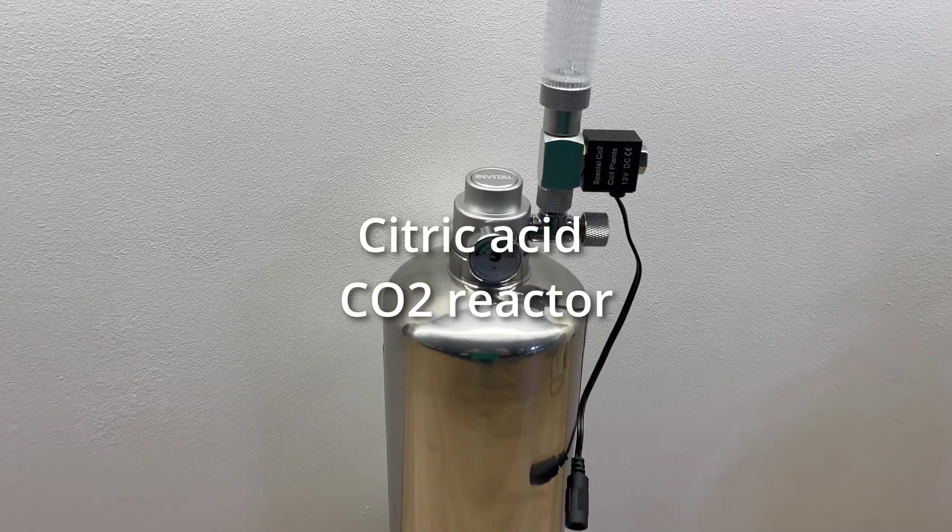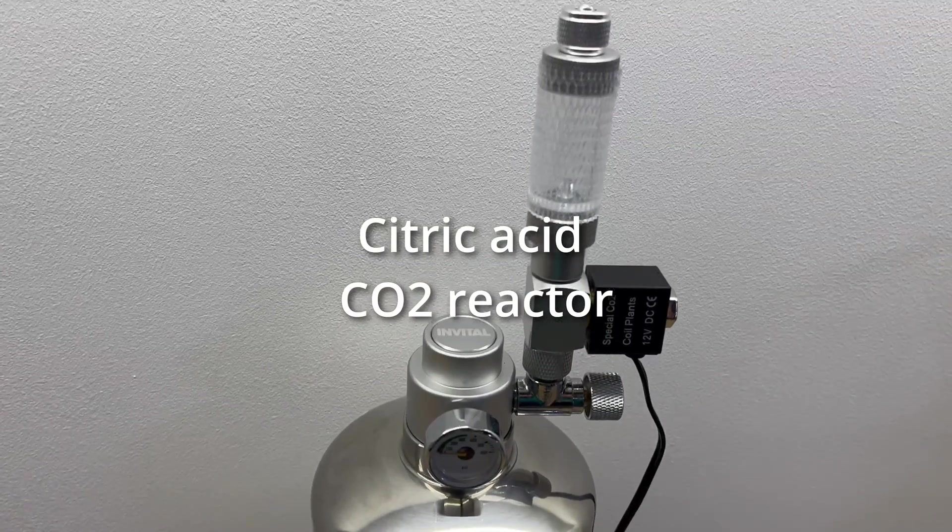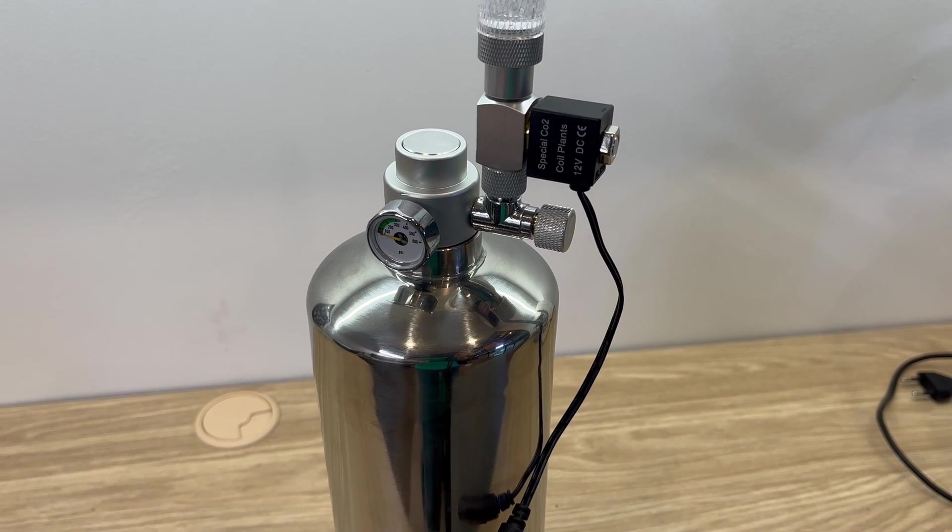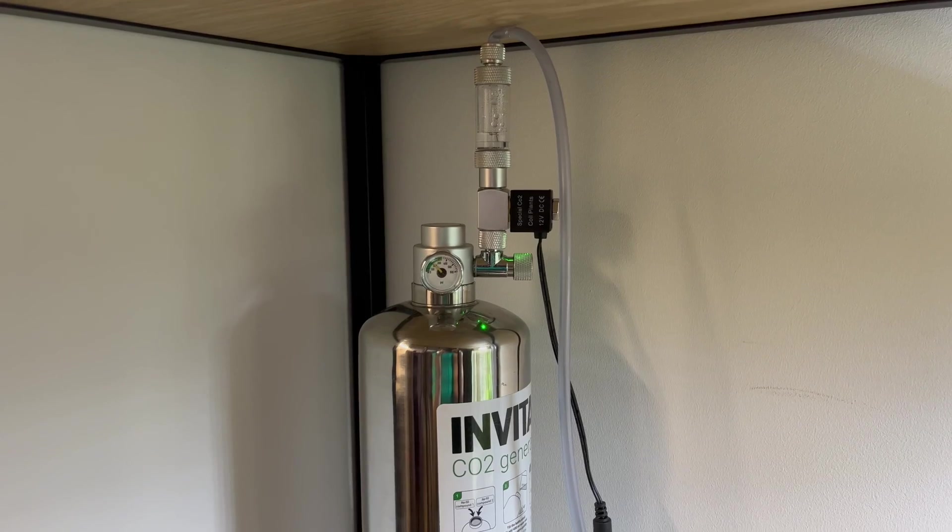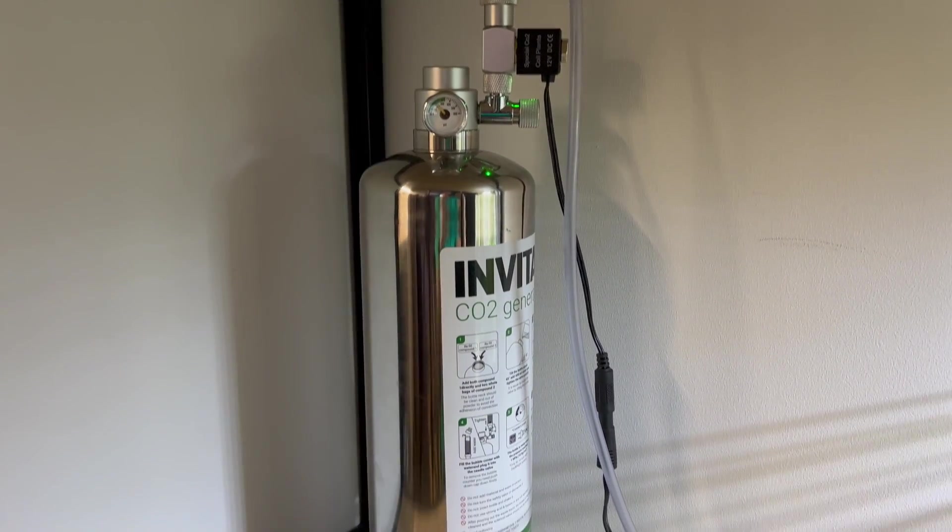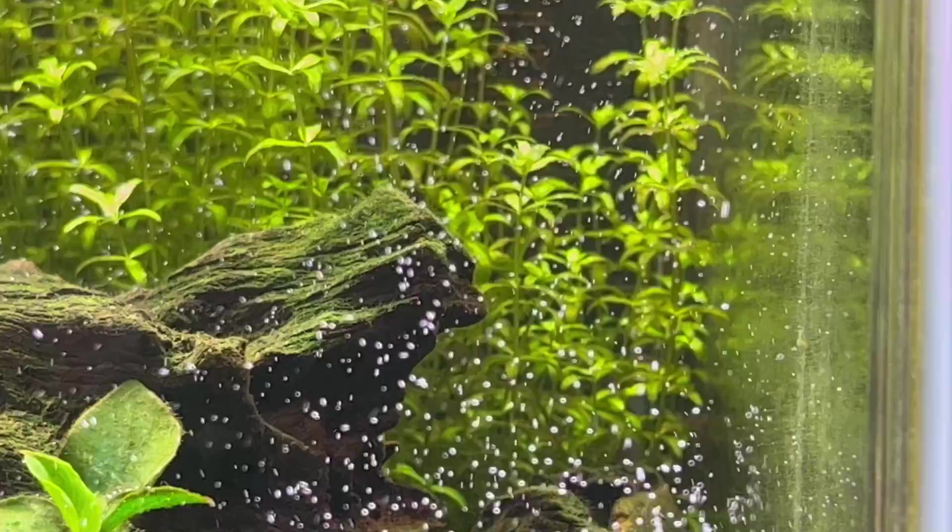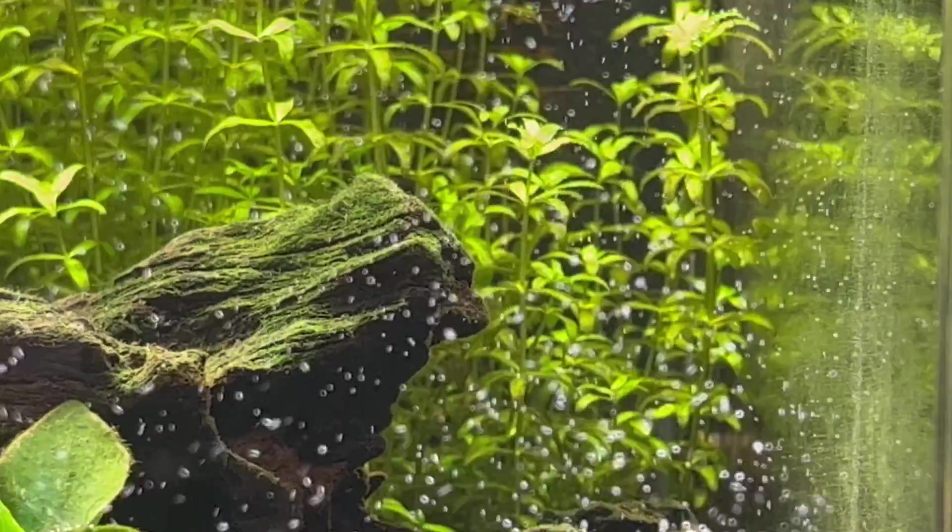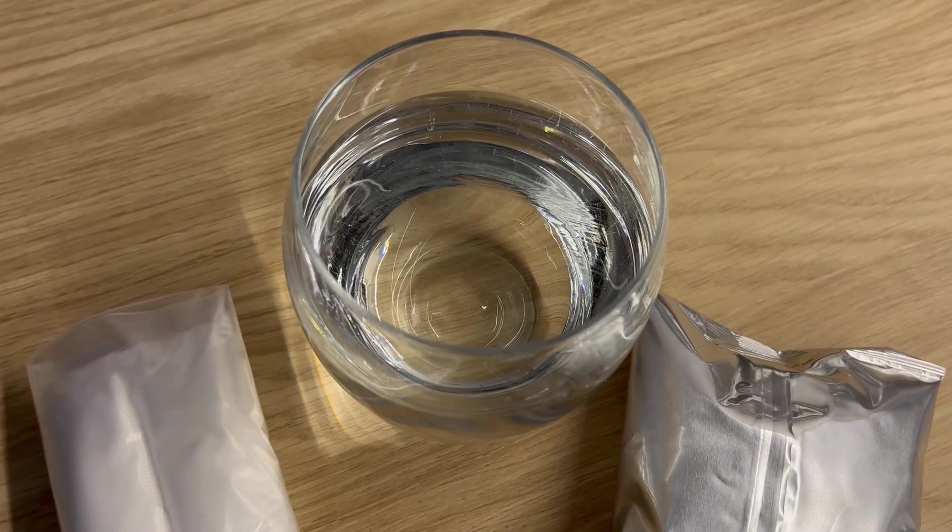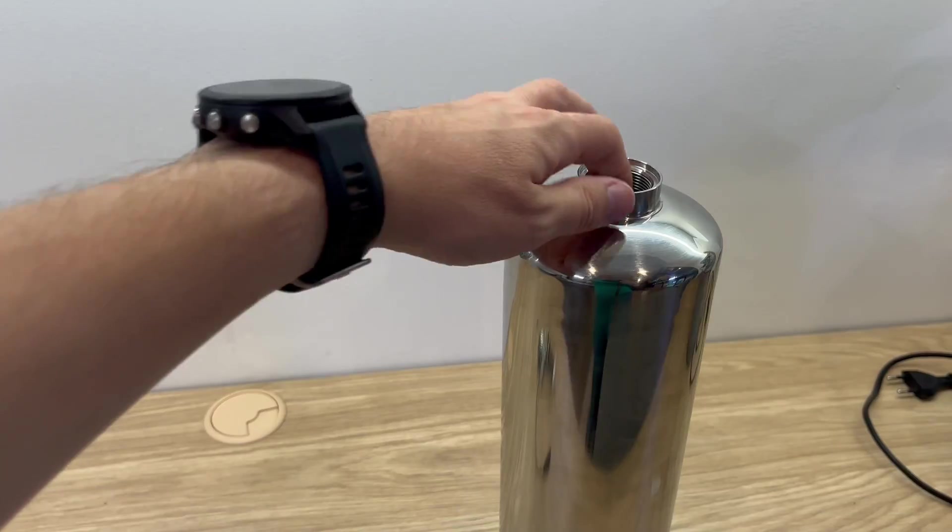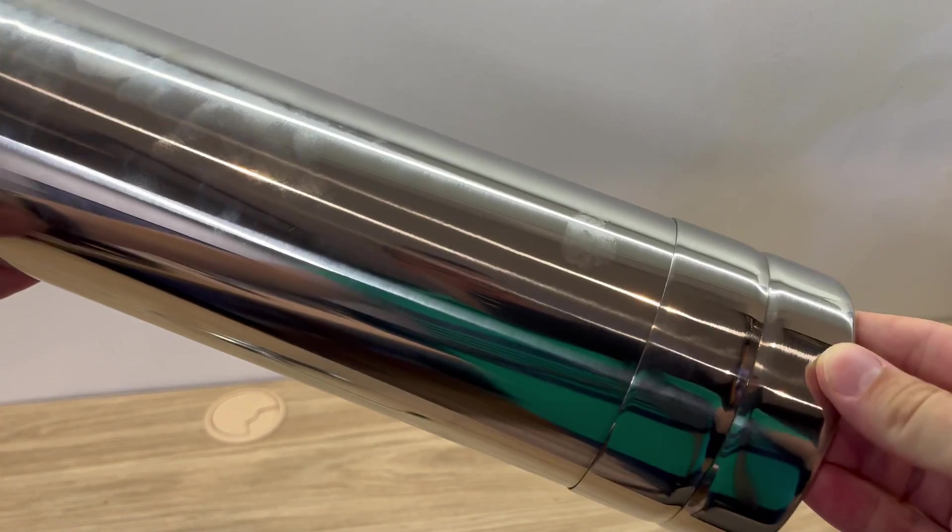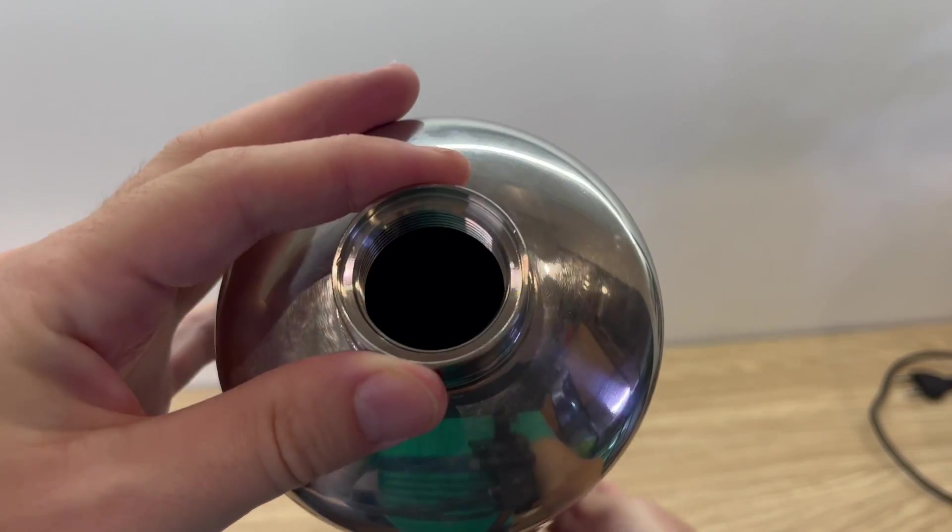Second option that I use is pressurized CO2 reactor based on citric acid. This one is the second in line when it comes to cost. You may think about it as a turbocharged version of the previous one. Because this system also creates CO2 from generally available ingredients: water, citric acid, and baking soda.